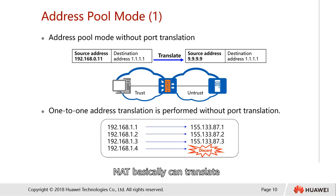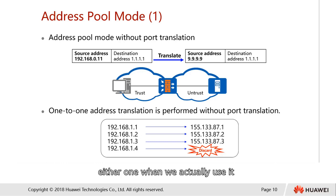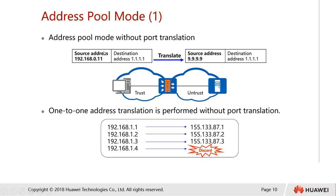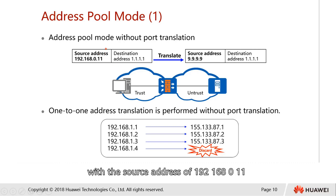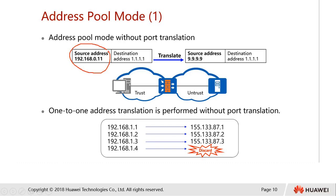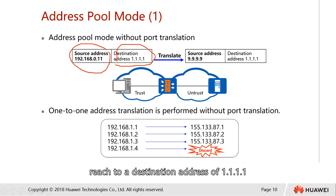NAT can basically translate both IP and port numbers, but we can actually choose either one to use. For example, if we have an internal host with the source address of 192.168.0.11 and this host is trying to reach a destination address of 1.1.1.1.